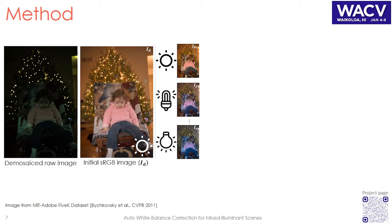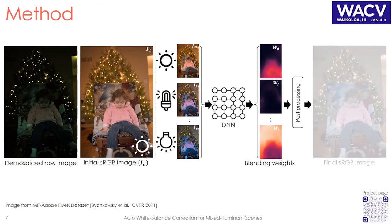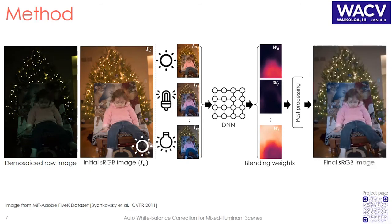Given this set of small sRGB images with different white balances applied, our method learns to estimate weighting maps that are upscaled through a post-processing step, then used to blend the multiple white balance images to produce the final corrected image.